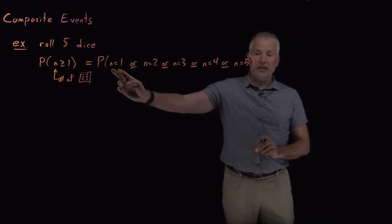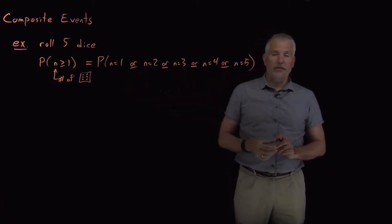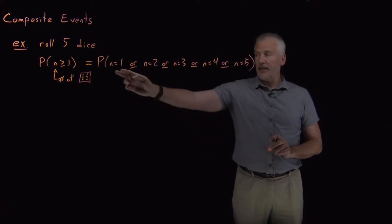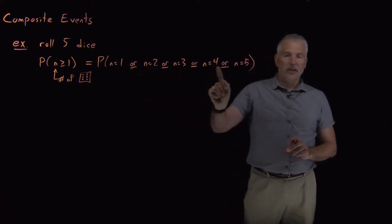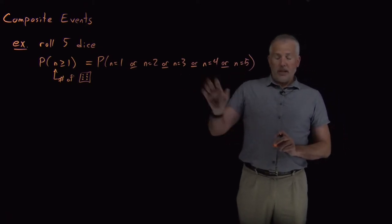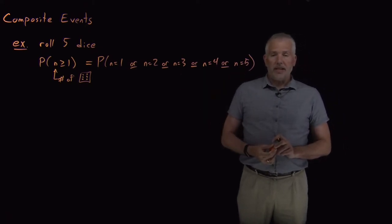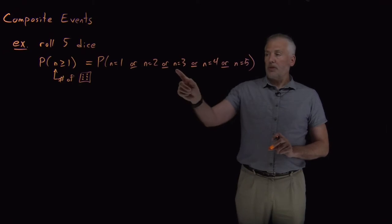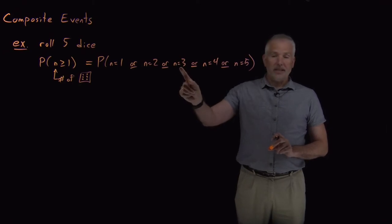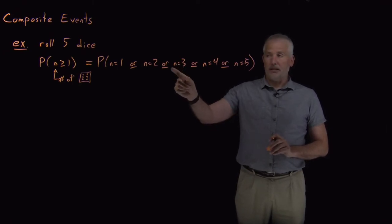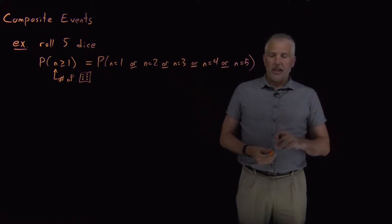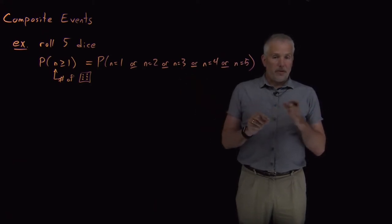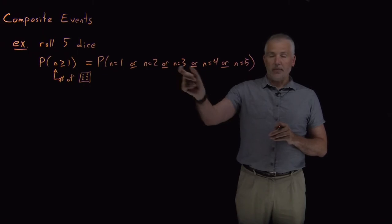Either I rolled exactly one six, or two sixes, three, four, or five — each of those possibilities excludes all the others. So I could calculate each probability and add them together. We'd certainly get the right answer that way; it's a valid approach. But each of those is itself a composite problem. Asking what's the probability of exactly three sixes out of five rolls forces me to break it down further — did I roll sixes on the first, second, and third roll, or maybe the first, third, and fifth roll? So it becomes its own composite problem.